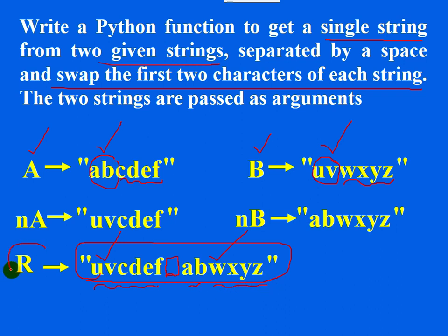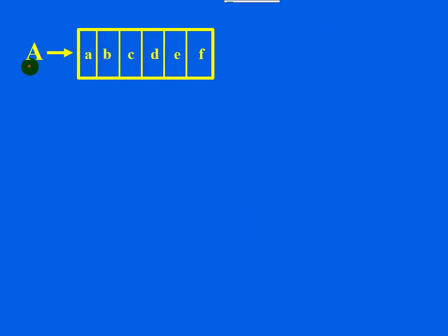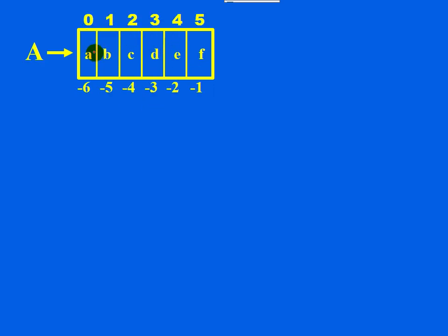So I need to calculate the resultant string like this. For this I need to create a function, and to that function the two strings must be passed as arguments — A and B. For string A which is ABCDEF, forward indexing starts at 0 for the first character, 1 for the second, and so on.